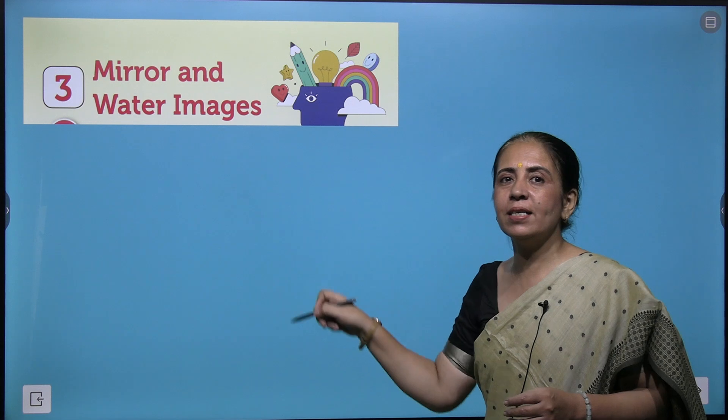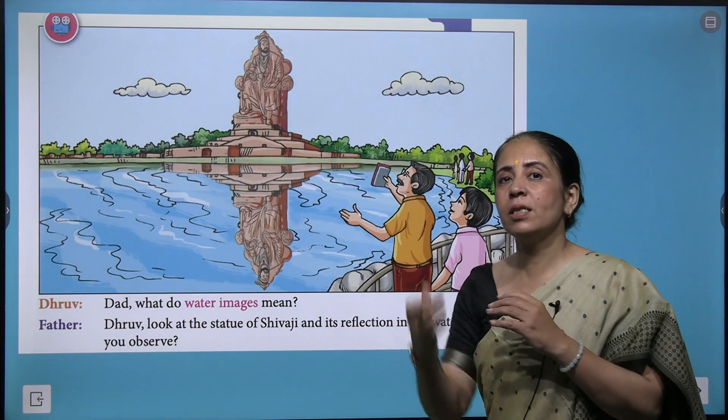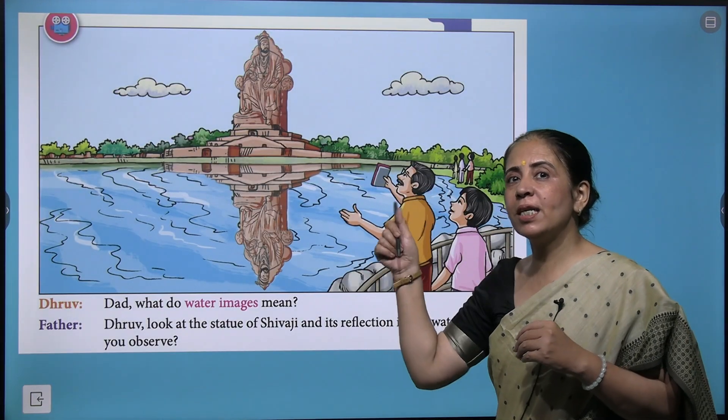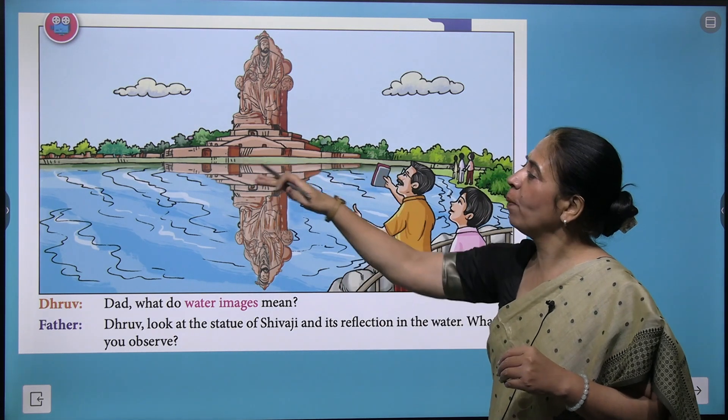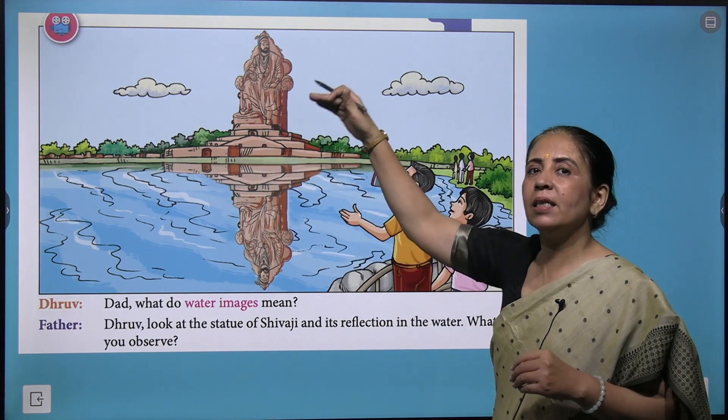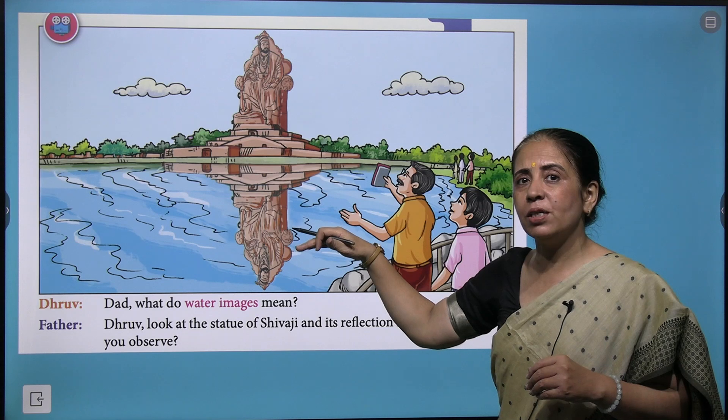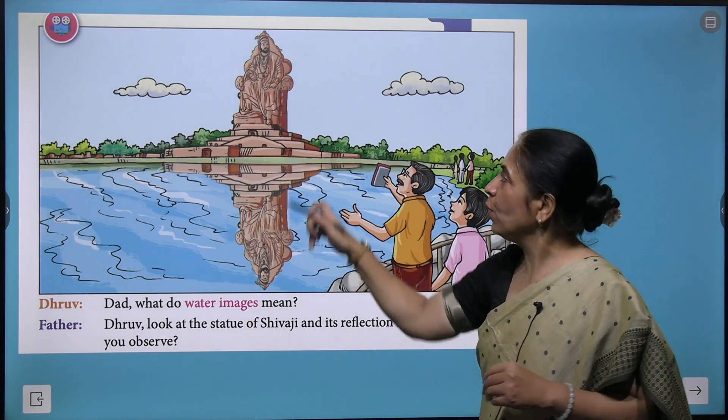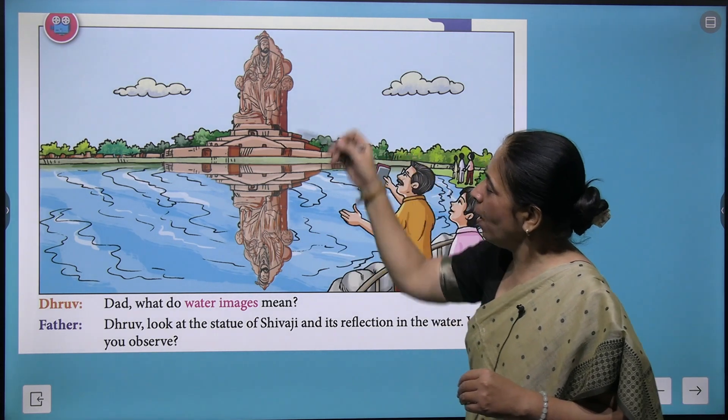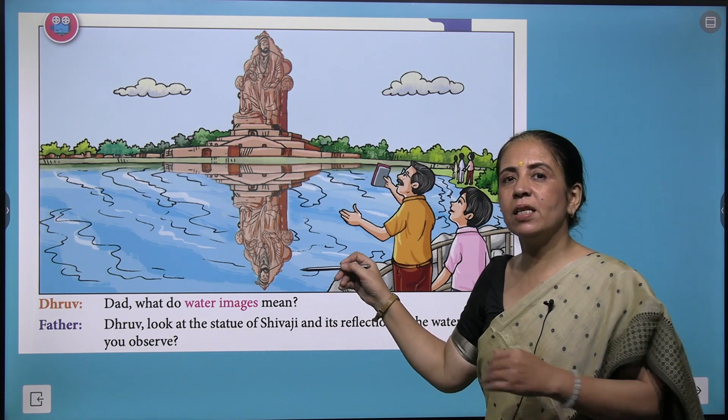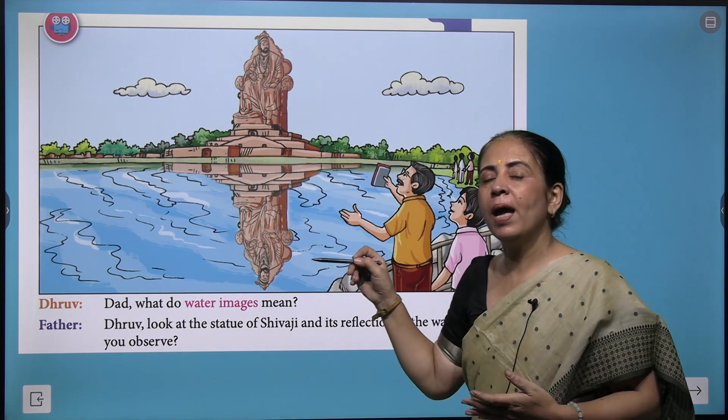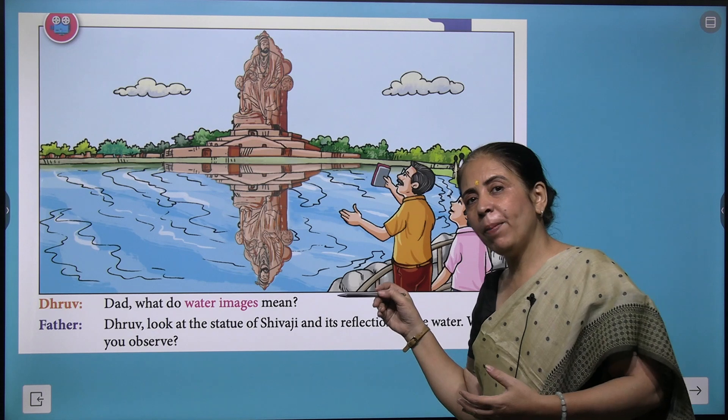So let's move ahead and understand what is a water image. Could you see here a statue of Shivaji formed near the water and the same image upside down is formed where you could see the head is at the top, here the head of Shivaji is at bottom.